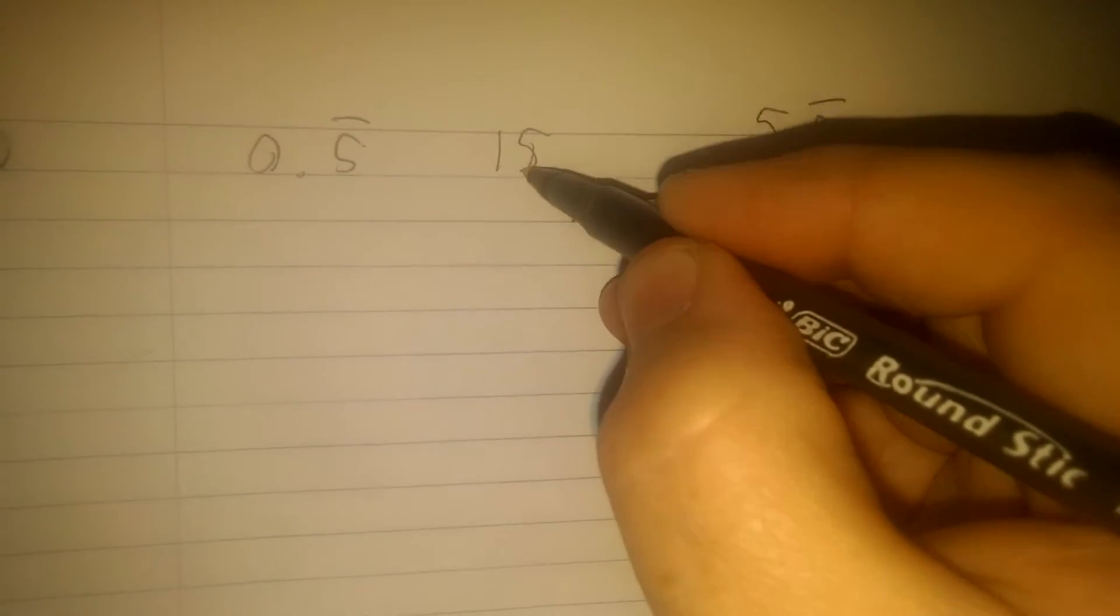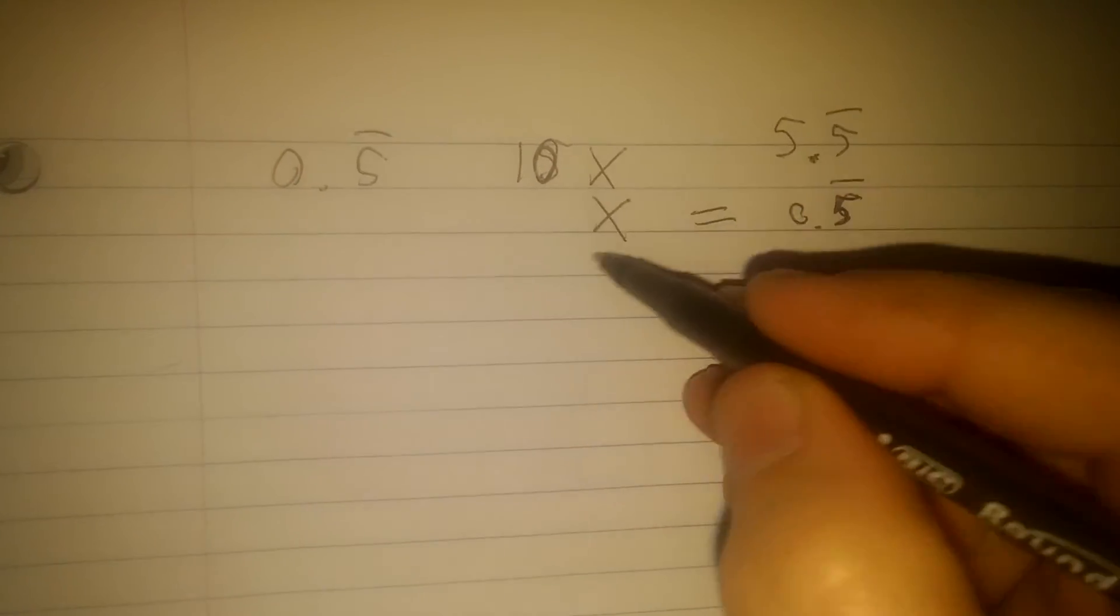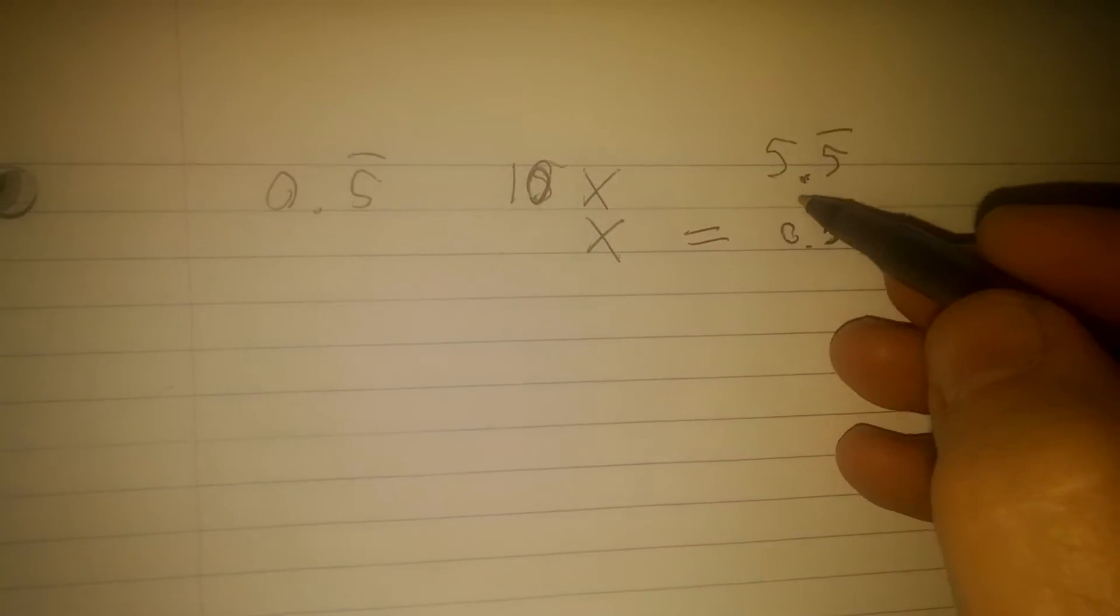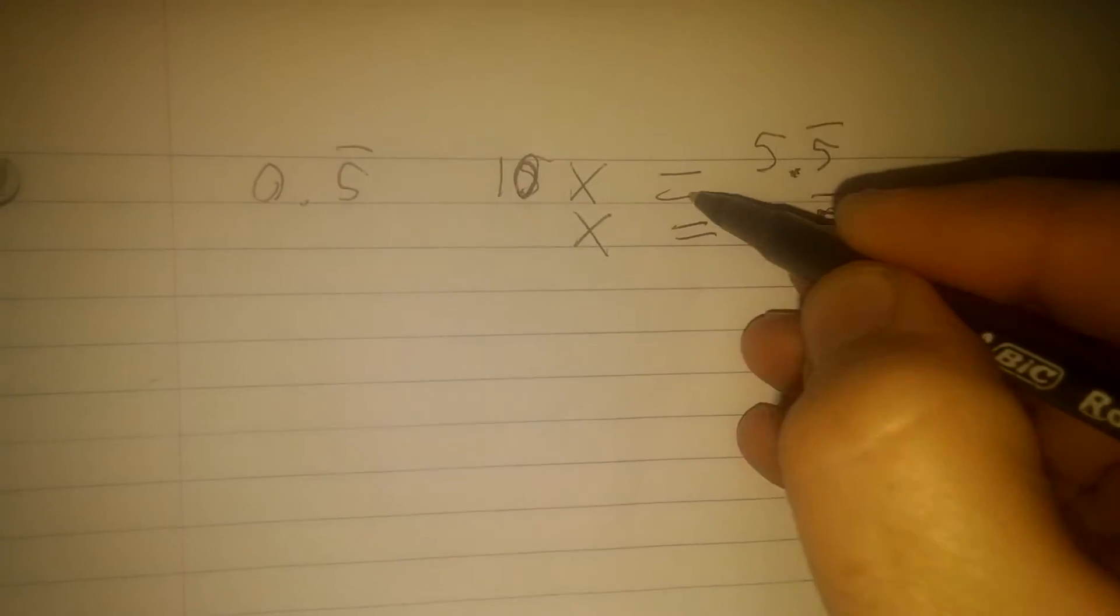So over here, I'm going to make that a 10x. So 10 times x is going to be 10 times 0.5 repeating. So I'll put an equal sign here.